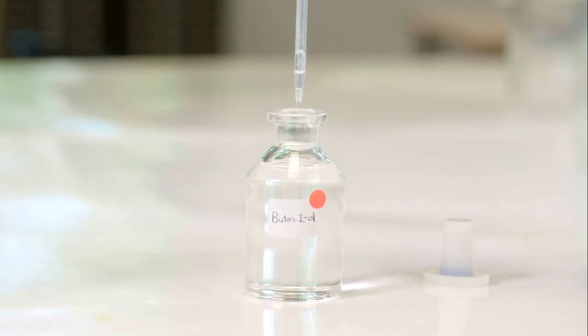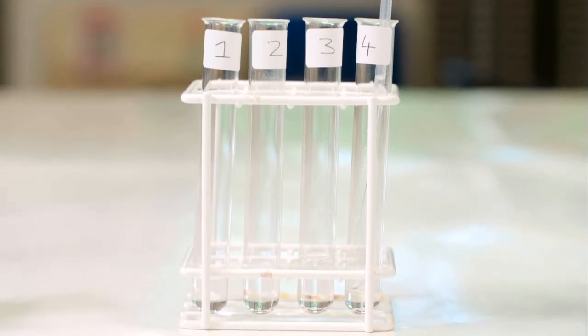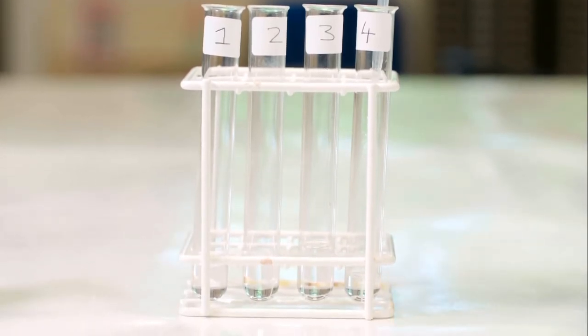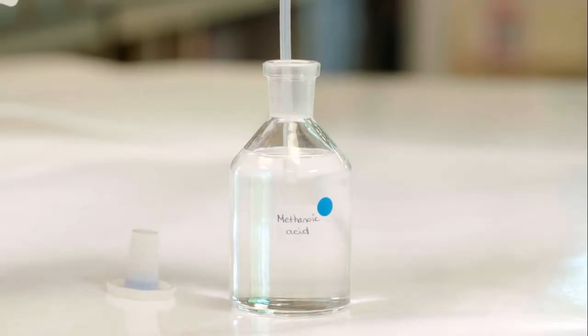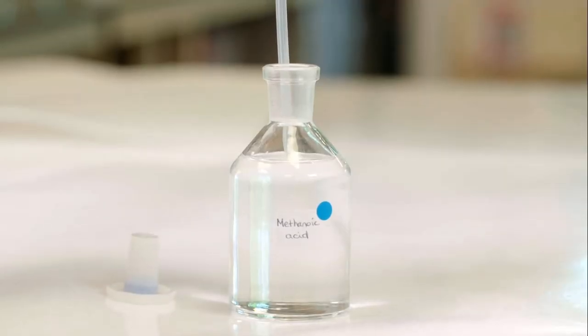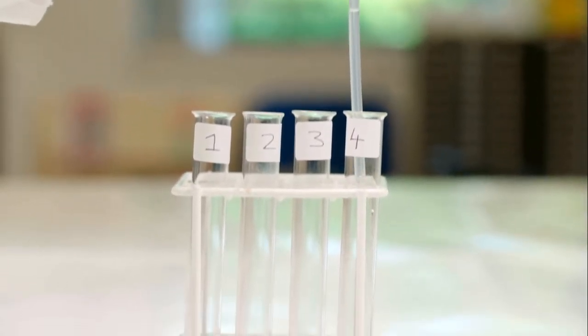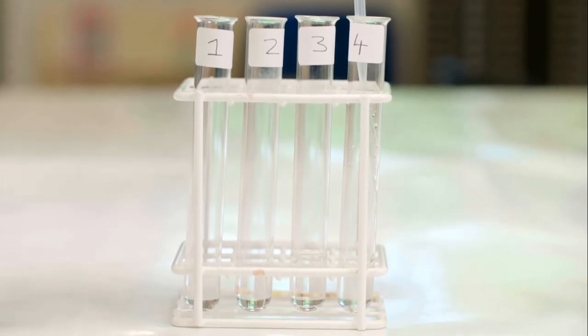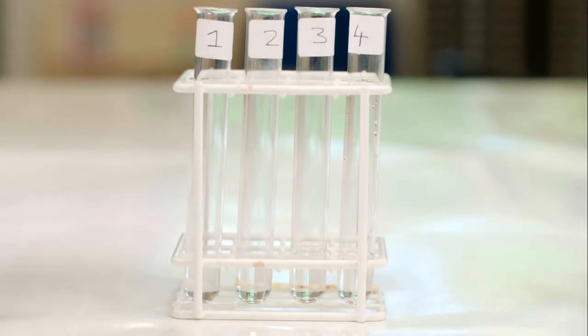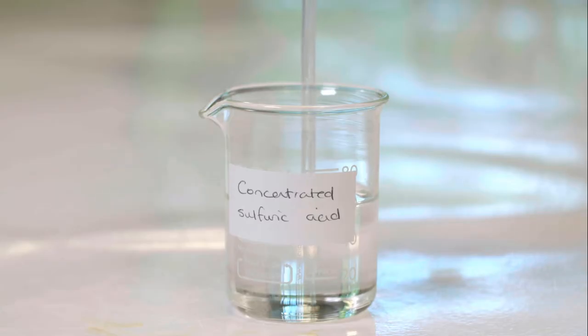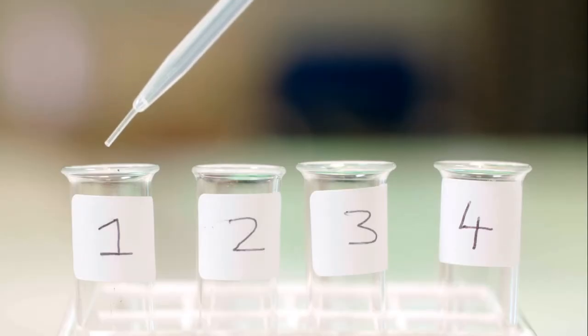Butanoic acid is added to test tube 4. Five drops of concentrated sulfuric acid is then added to all four test tubes.